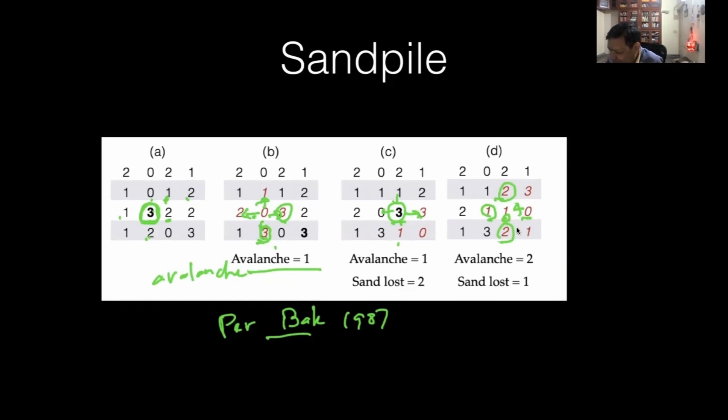What happens when this three becomes four? Four will again start toppling. This is called the toppling event. Four will pass one to each neighbor, so four will pass here and here. This zero becomes one, this two becomes three.